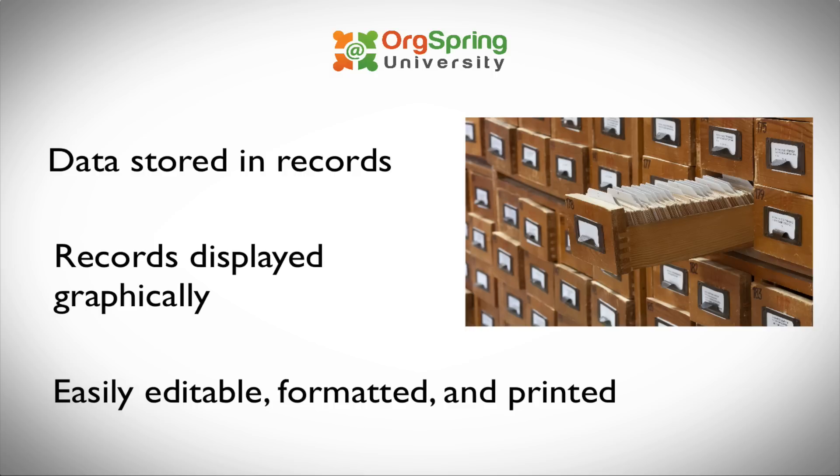You store records and each contact has one record in the system. When you call up that person's record it displays graphically on your screen. You can see here in this picture an example of how that information is displayed — it looks a lot like a library card catalog, except it's digital.